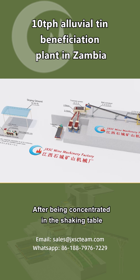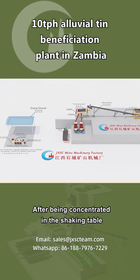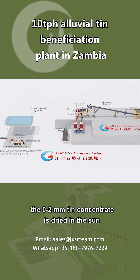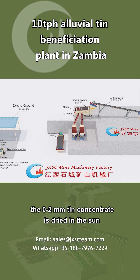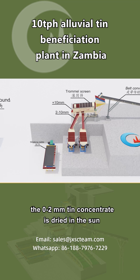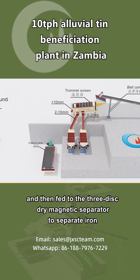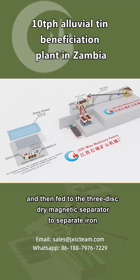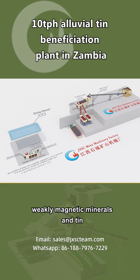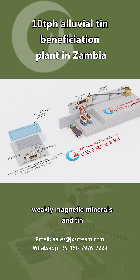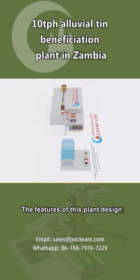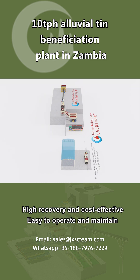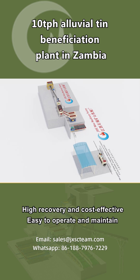After being concentrated in the shaking table, the 0 to 2 mm tin concentrate is dried in the sun and then fed to the 3-disc dry magnetic separator to separate iron, weakly magnetic minerals, and tin.